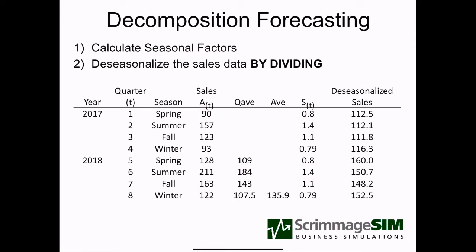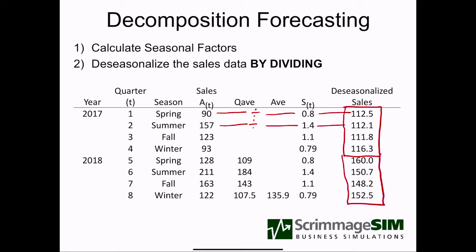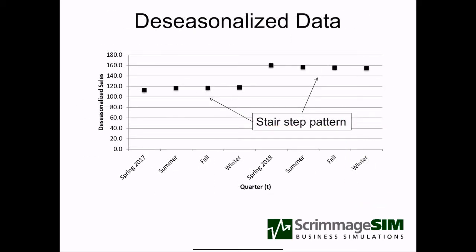To de-seasonalize, we take the sales and divide by the seasonal factor to get de-seasonalized sales. For example, $157 divided by 1.4 gives $112, and so on. One thing we notice with the de-seasonalized data is that within a particular year the values are fairly consistent — around $112 to $116 range in year one, and $148 to $160 in year two. Graphically, it's easier to see this stair-step pattern. If we don't see the stair-step pattern, the decomposition forecasting model is likely not going to work well.